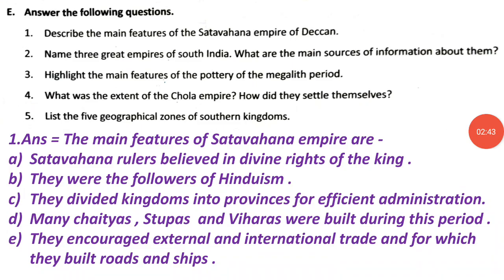Section E: Answer the following questions. Question 1: Describe the main features of the Satavahana empire of the Andhra. Answer: The main features of the Satavahana empire are: Satavahana rulers believed in divine rights of the king. They were followers of Hinduism. They divided kingdoms into provinces for efficient administration. Many Chaityas, stupas, and Viharas were built during this period. They encouraged external and international trade, for which they built roads and ships.